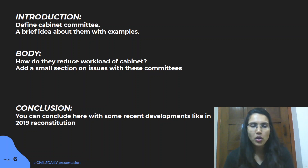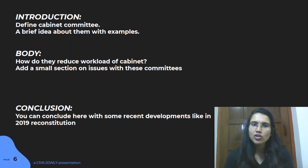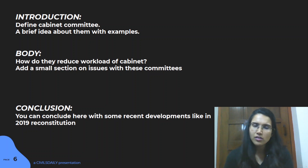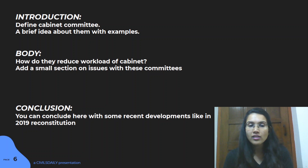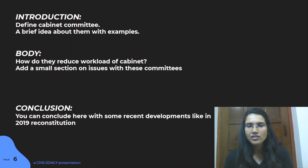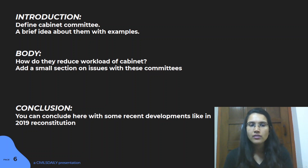After covering the positives, add a small section on issues with these committees. Keep it brief since the question is framed positively. Issues include irregular meetings, junior ministers not being part of cabinet committees, and political considerations affecting their functioning. The conclusion can be challenging to frame as a way forward, so consider linking to reports like the Second ARC if you remember relevant points.